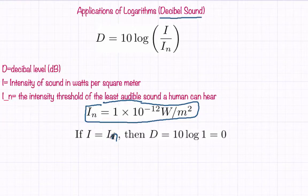Now, if i equals i sub n, then the decibel is going to be 0 dB.